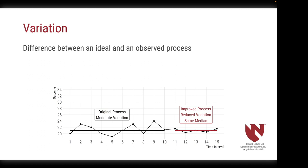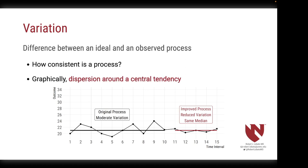What we want to understand is how consistent a process is. In a run chart, we can interpret variation as the dispersion around a central tendency — how far points lie above and below the median for that sample. The larger the distance between the median and the points, the larger the variation. On the left-hand side of the figure, you can see reduced variation following a process improvement. Both samples contain the same median, but the distance those points lie above or below the median has been drastically reduced.